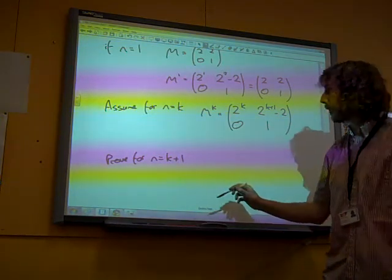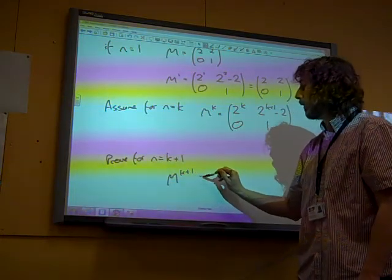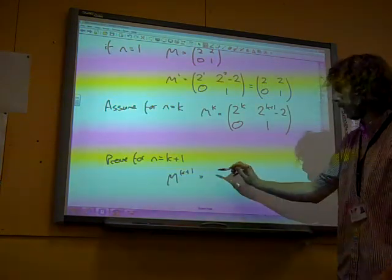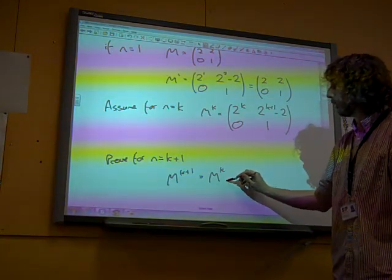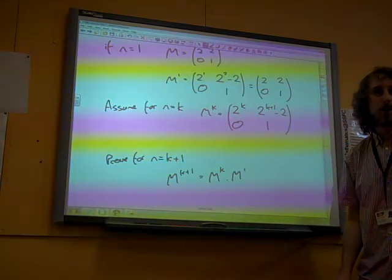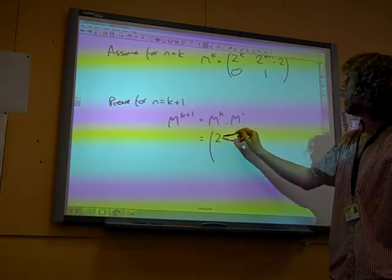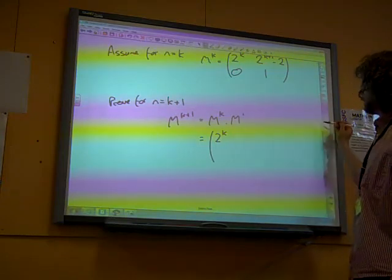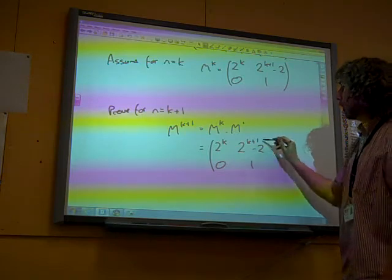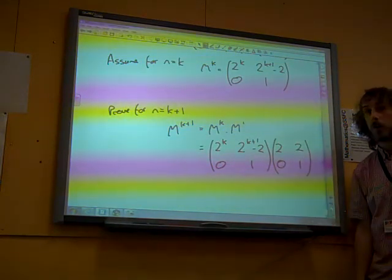Let's go for it. Well, M to the k plus 1 simply means M to the k times M to the 1. Because when you multiply things together, you add the powers. So that's what we're going to do. We're going to multiply these two matrices together. M to the k from our assumption is this, M to the power of 1 and the initial part of the question looks like that.